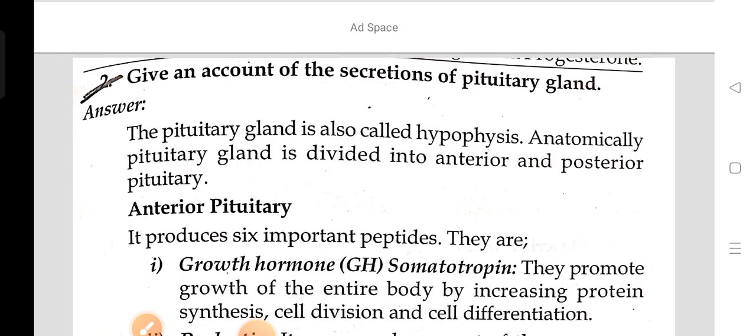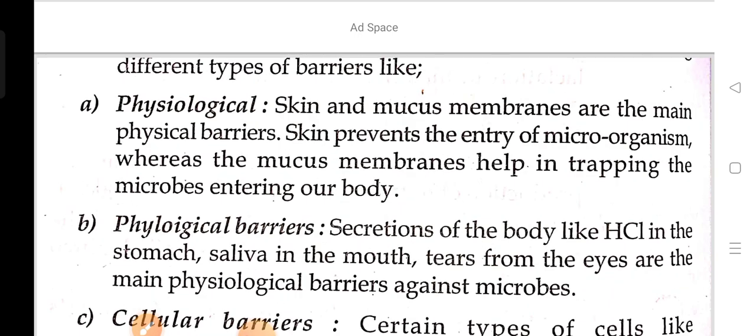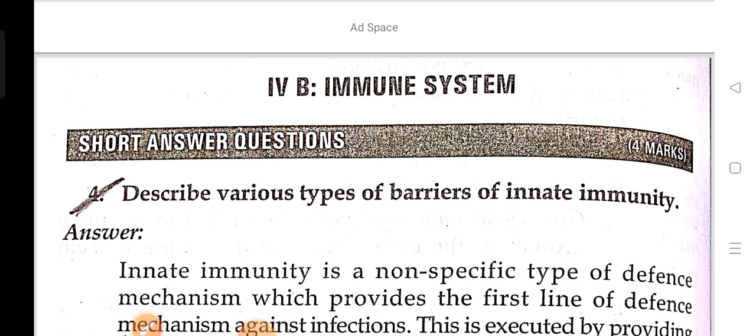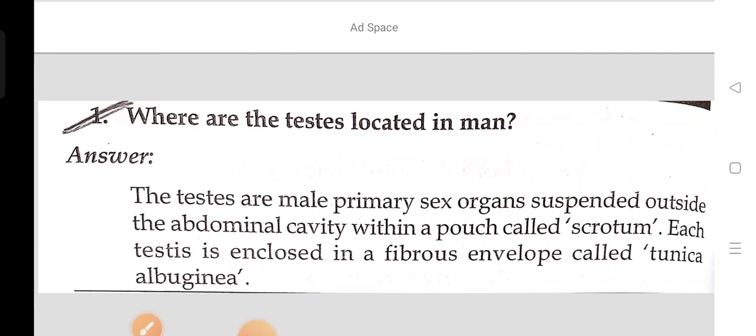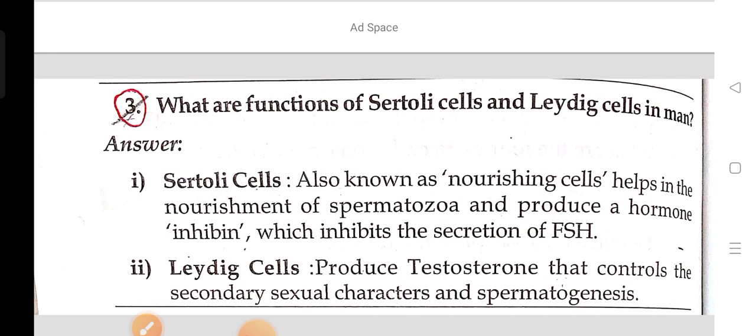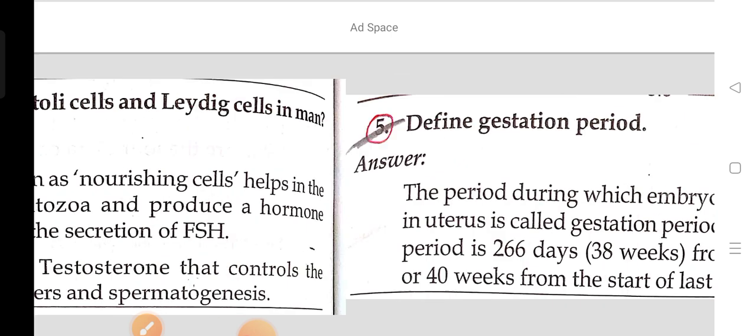Give an account of the secretions of the pituitary gland. Discuss the various types of barriers of the innate immunity. What is active immunity? What are antibodies? What is spermatogenesis and where does it occur in man? What are the functions of the Sertoli cells and the Leydig cells in man?